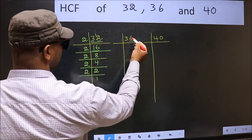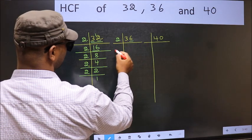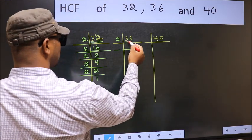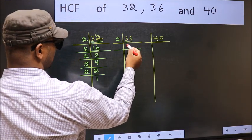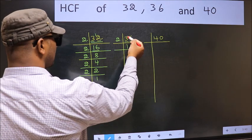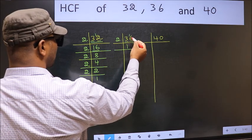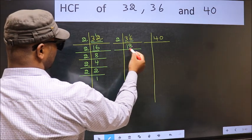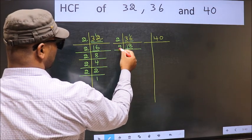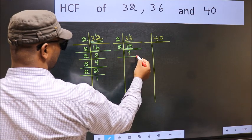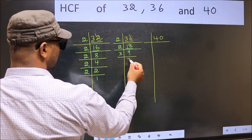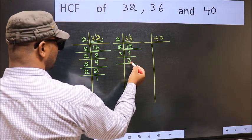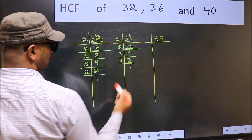Now here last digit 6 even so take 2. First number 3. A number close to 3 in 2 table is 2 once 2. 3 minus 2 is 1, 1 carried forward 16. When do we get 16 in 2 table? 2, 8, 16. Now 18 is 2 nines, 18. Now 9 is 3 threes, 9. Now we have 3, 3 is a prime number so 3 once 3.